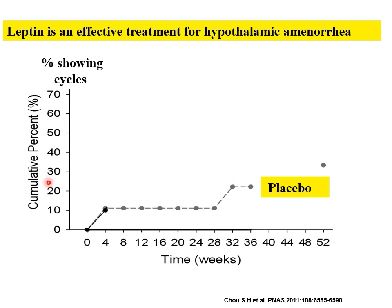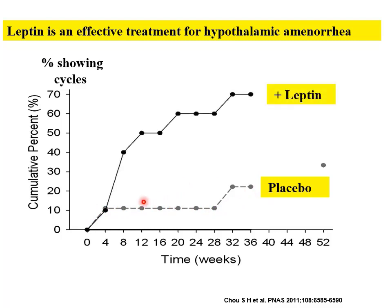Could leptin be used as a treatment for women with infertility due to a hypothalamic issue — for instance where the GnRH pulse generator isn't being driven properly, causing hypothalamic amenorrhea? Treating women with leptin versus placebo over weeks shows that the percentage showing regular cycles leaps up rapidly with leptin. So leptin can act as a driver of the hypothalamus.